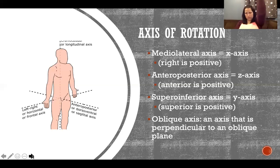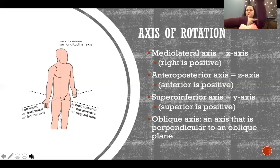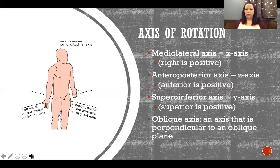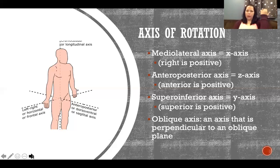For flexion and extension — sagittal movement — the axis goes side to side, which is the medial-lateral axis. This is always the case as long as our joints are in anatomical position. So if I'm standing up straight, palms facing forward, and I do flexion and extension, that movement is happening in the sagittal plane around the medial-lateral axis.